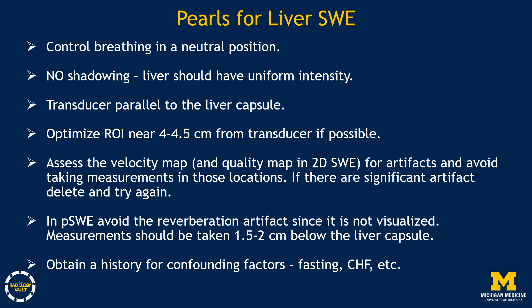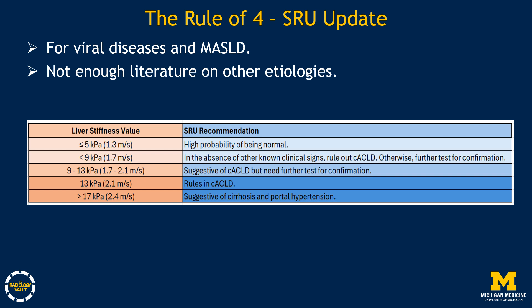The rule of four from the recent SRU update applies to viral diseases and MASLD only; there is not enough literature on other etiologies. If liver stiffness is less than or equal to 5 kilopascal, there is high probability of being normal. Adding 4 kilopascal brings the threshold to 9 kilopascal, and another 4 up to 13 kilopascal rules in compensated advanced chronic liver disease. If greater than 17 kilopascal, it is suggestive of cirrhosis and portal hypertension.